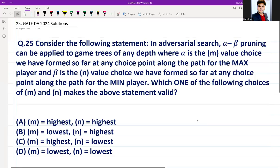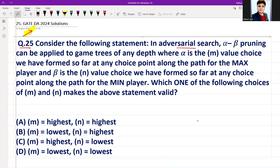This question was asked in GATE DA 2024, question number 25 in the morning session paper one. Consider the following statement: In adversarial search, alpha-beta pruning can be applied to game trees of any depth.